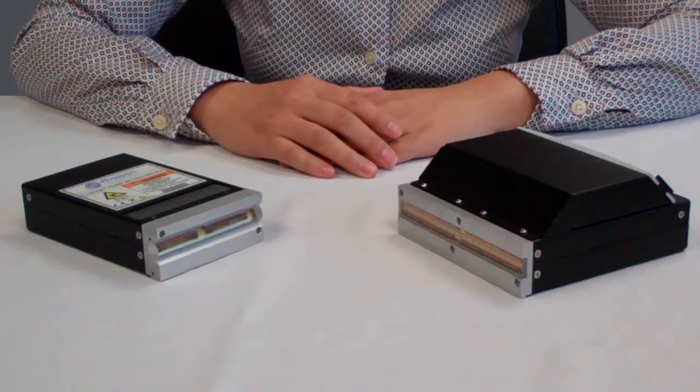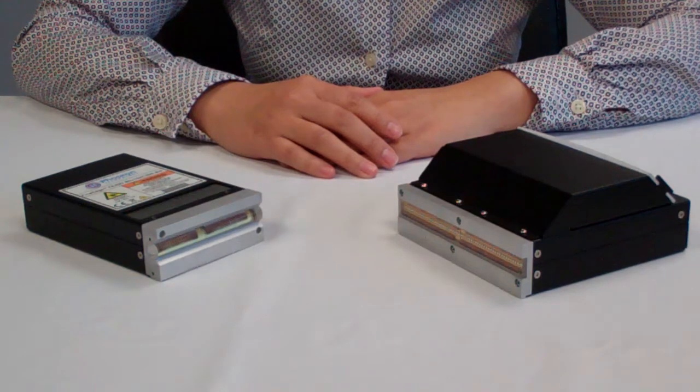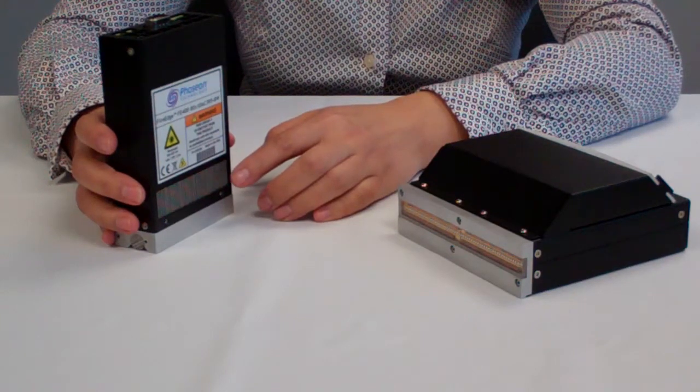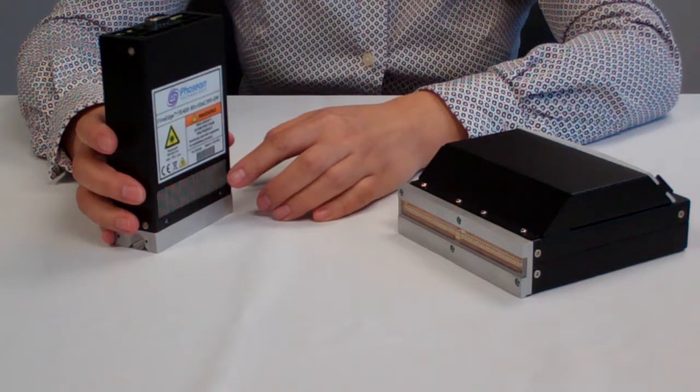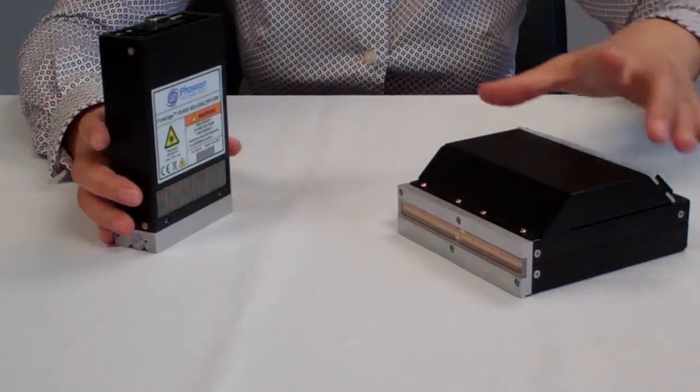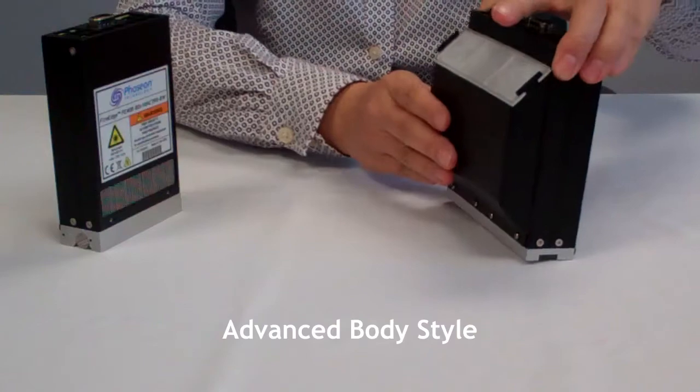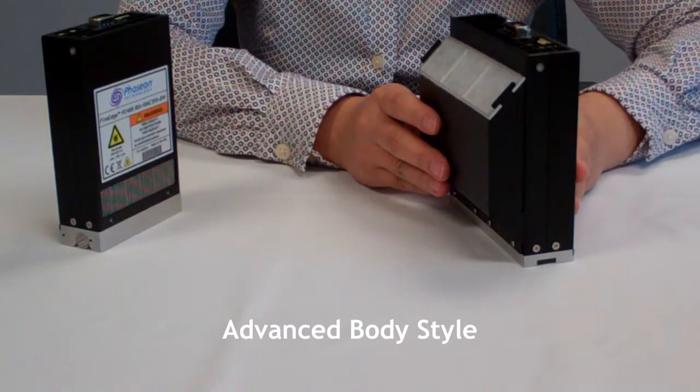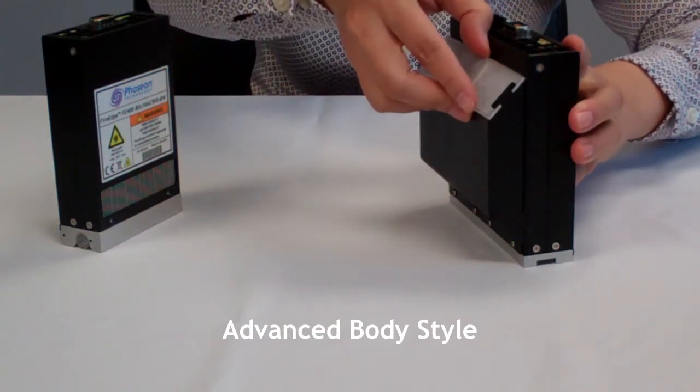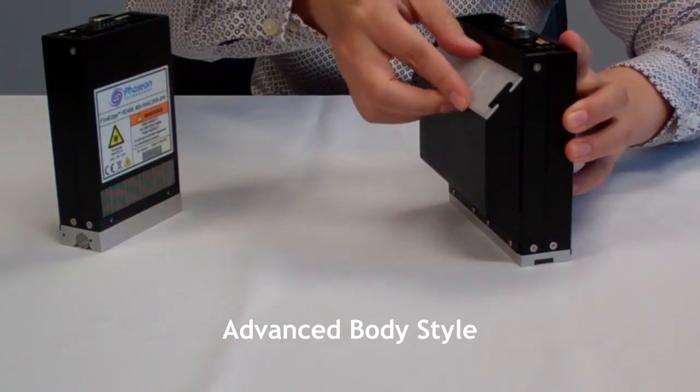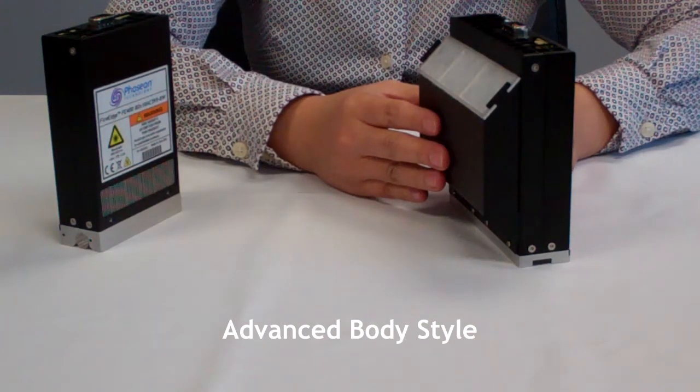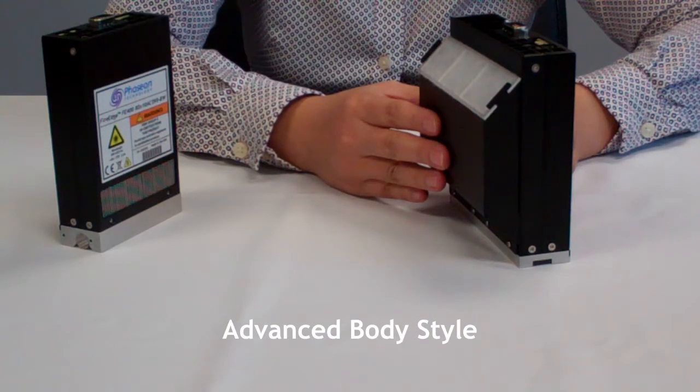The FireEdge FE400 is an air-cooled product. The air inlet is at the bottom front of the product and the air exhaust is located at the top of the product. As shown here, the advanced body style with easily replaceable filter at the top of the scoop is available for customers with more concerns about particle ingression into the unit.